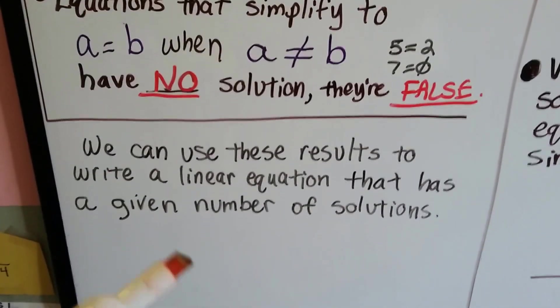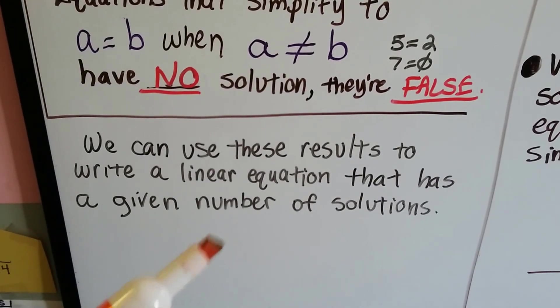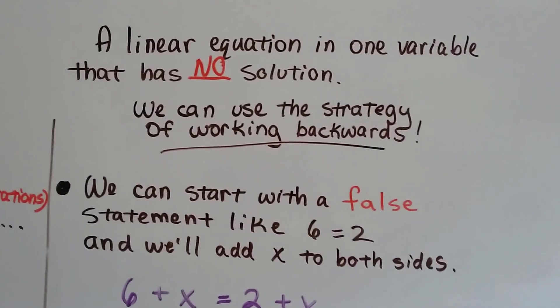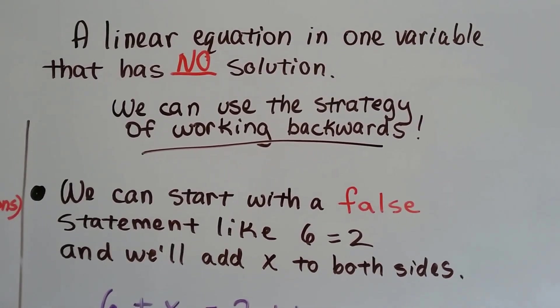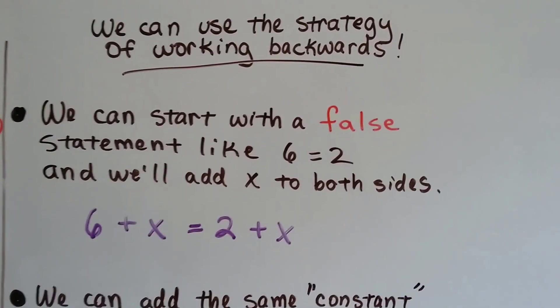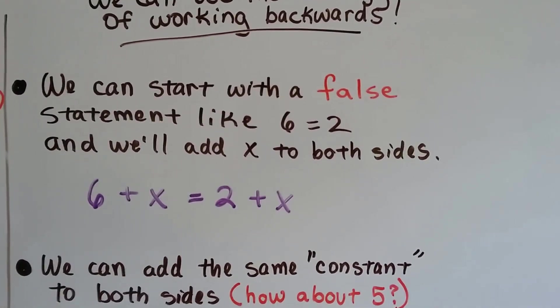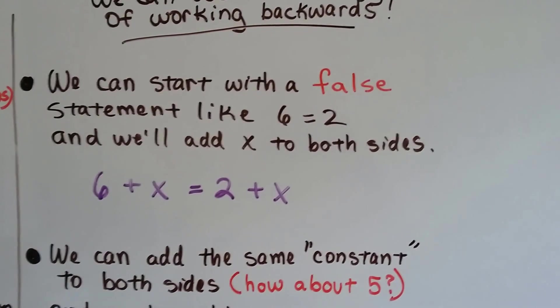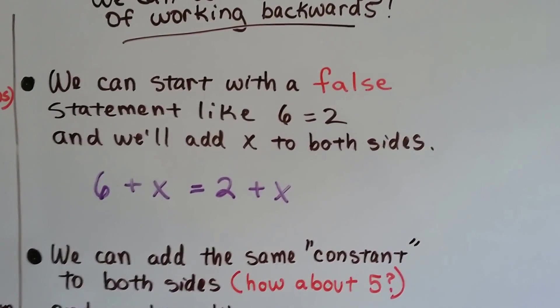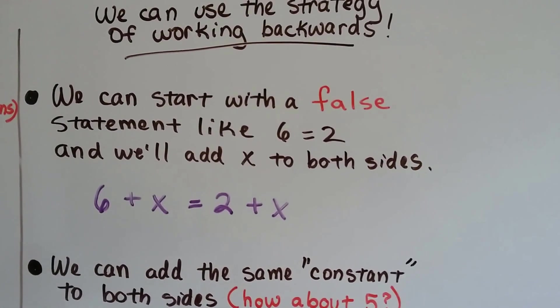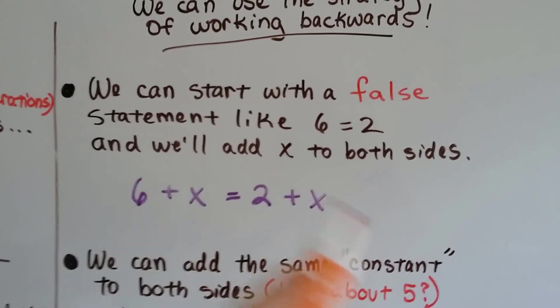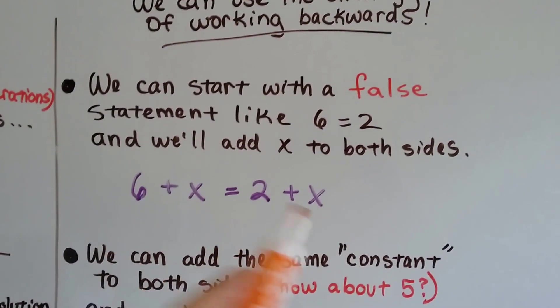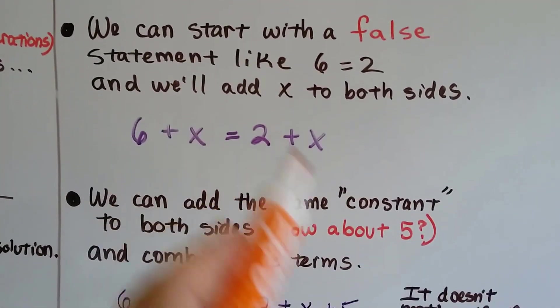There's no solution. We can use these results to write a linear equation that has a given number of solutions. Now, a linear equation in one variable that has no solution, we can use the strategy of working backwards. We can start with a false statement like 6 equals 2. We'll add an x to both sides, and now we've got 6 plus x equals 2 plus x. Is there some constant number that we could add or subtract to both sides to maybe make this true?